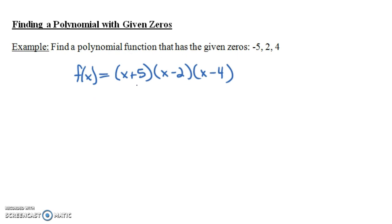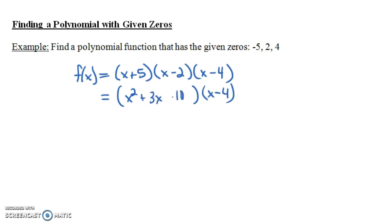Now, if we wanted to write this in standard form, let's multiply out (x + 5)(x - 2) first using FOIL. x times x gives us x². We have +5x from the inside two terms and -2x from the outside two terms, giving us +3x. And 5 times -2 is -10. So we have x² + 3x - 10 times (x - 4).